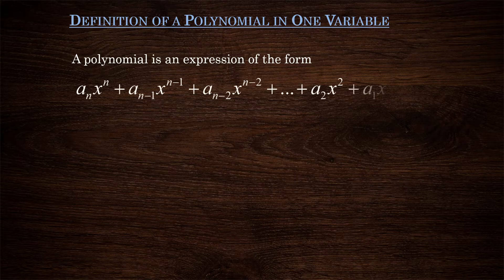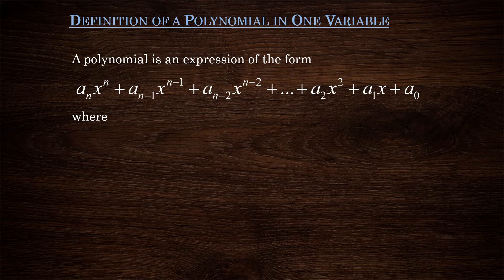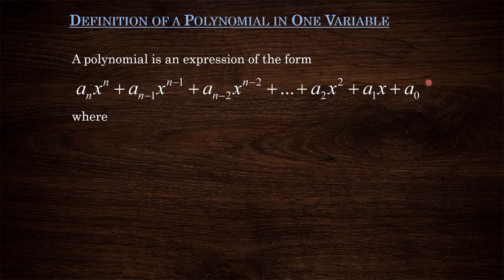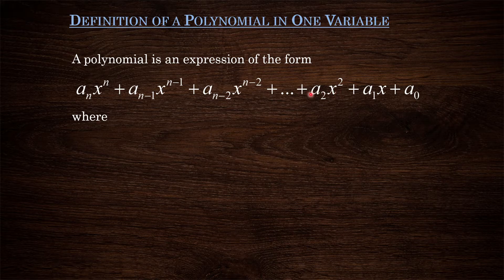A polynomial is an expression of this form. Now that might look a little bit intimidating right now, but once we start replacing some of these letters with numbers, you'll see that it's not that bad. We're adding a bunch of terms, and notice that these terms have powers of x: x to the n, x to the n minus 1, all the way down to x squared, x to the 1, and our constant term, which we can think of as the x to the 0 term. With those powers of x, we have some other numbers out in front, which we call the coefficients. So a1 is the coefficient for our x term, a2 is the coefficient of x squared, all the way up to an, which is the coefficient for our x to the n term.